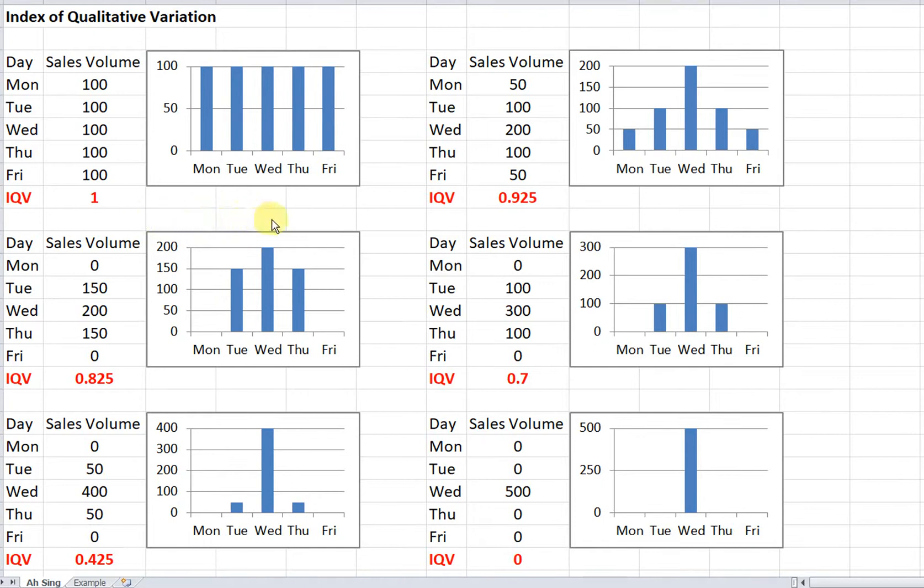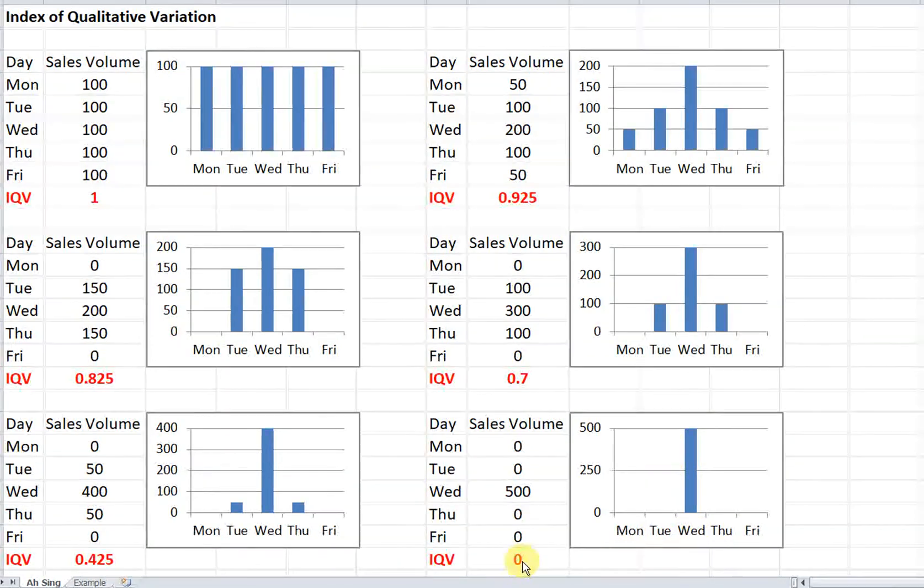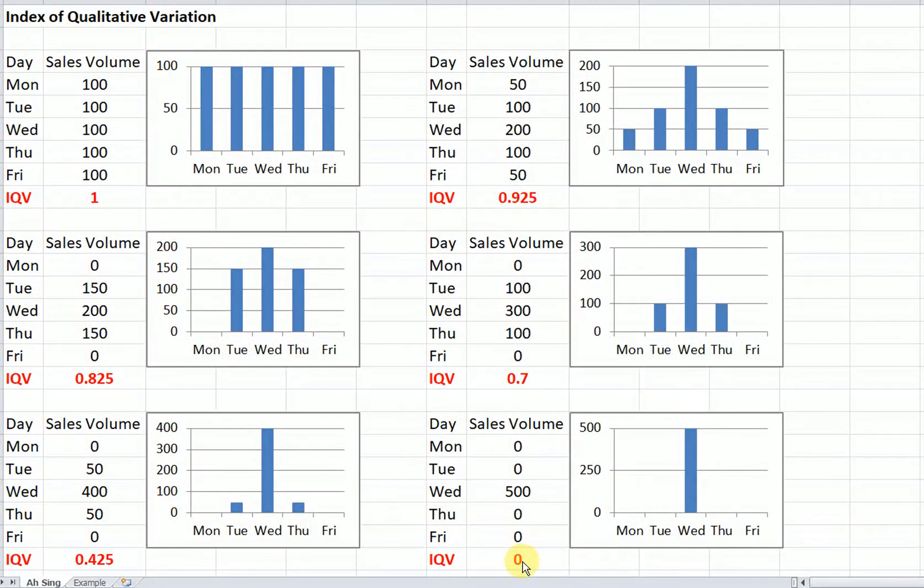If the data is central or focused on only one category, then we will achieve a minimum level of IQV, which is equal to 0. As we can see, no difference at all. Everything is central or grouped into only one particular category.